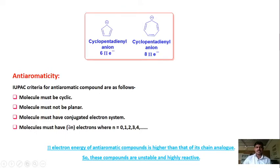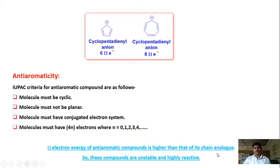The pi electron energy of anti-aromatic compounds is higher than that of their chain analog. This makes anti-aromatic compounds very unstable, and because of their instability, they react very fast. Anti-aromatic compounds react very fast, whereas aromatic compounds are stable.